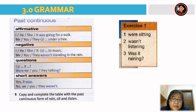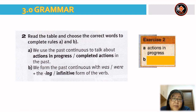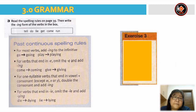For question two, read the table and choose the correct words to complete rules A and B. A: we use the past continuous to talk about actions in progress in the past. B: we form the past continuous with was or were plus the verb and -ing form of the verb. So the answer for A is 'actions in progress' and for B is '-ing'.